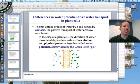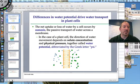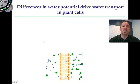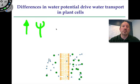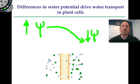So let's just jump right into that conversation. The difference in water potential is what drives the movement of water in a plant. Water is going to move from an area of high water potential — we use the Greek symbol psi for that — to an area of low water potential. This difference between these two is what drives the movement of the water.